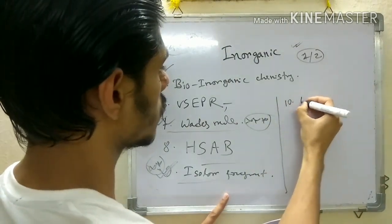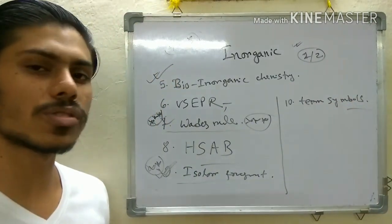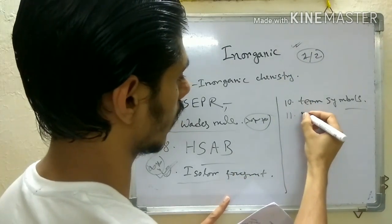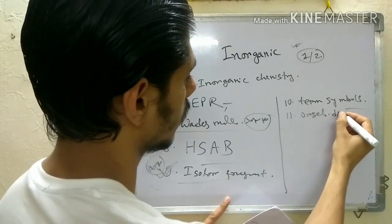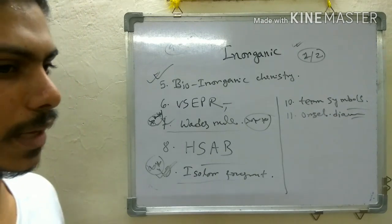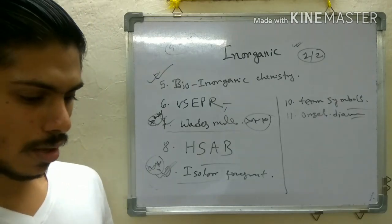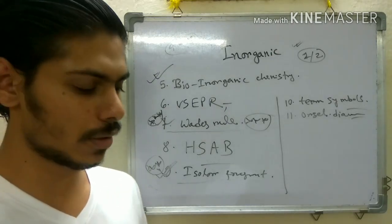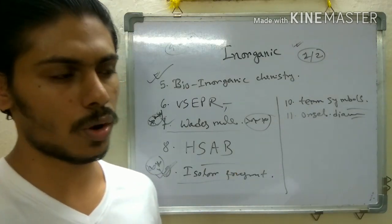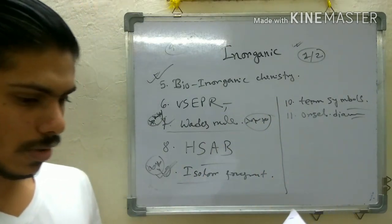You also need to cover term symbols — ground state and excited state term symbols. Related to this is the Orgel diagram, which is a relatively complicated topic conceptually. If you are comfortable with it you can do it, but if not you can skip it. A question from the Orgel diagram comes alternately — not every time — so it is a good topic to know.